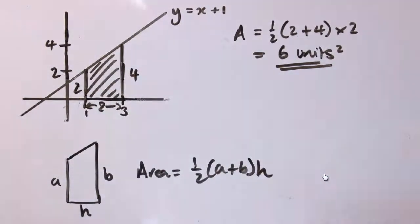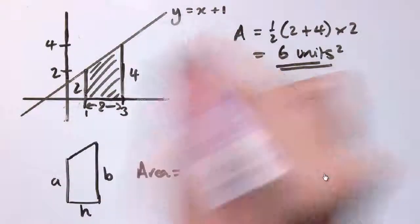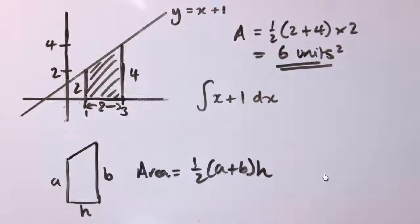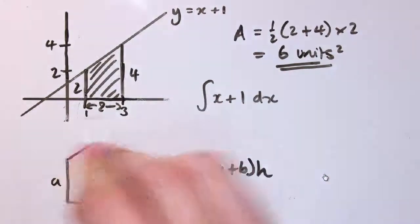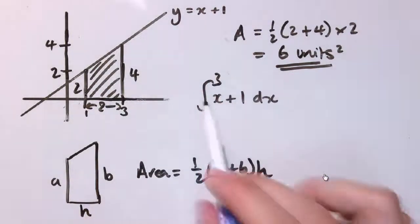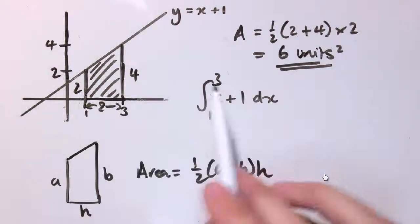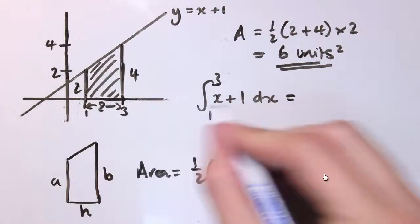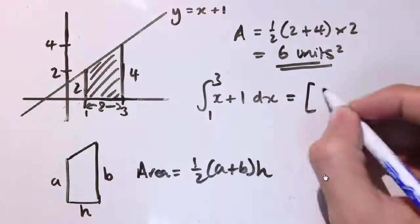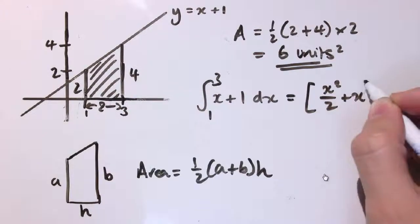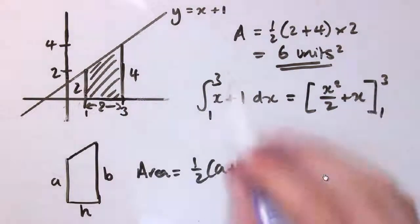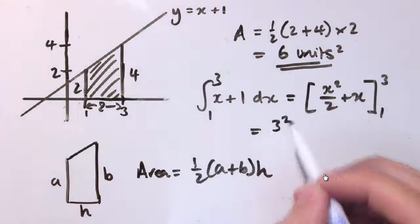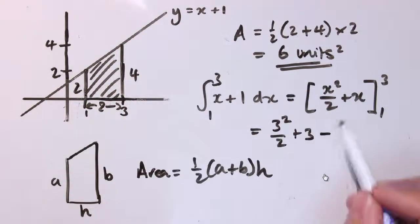Now the way we can do this with integration is to integrate the line x + 1 with respect to x. I'm going to write the definite integral with limits 1 and 3. This means: integrate, then substitute the upper and lower limits in and subtract one from the other. Anti-differentiating gives x² / 2 + x, and we move the limits 1 and 3 to the right in our notation.